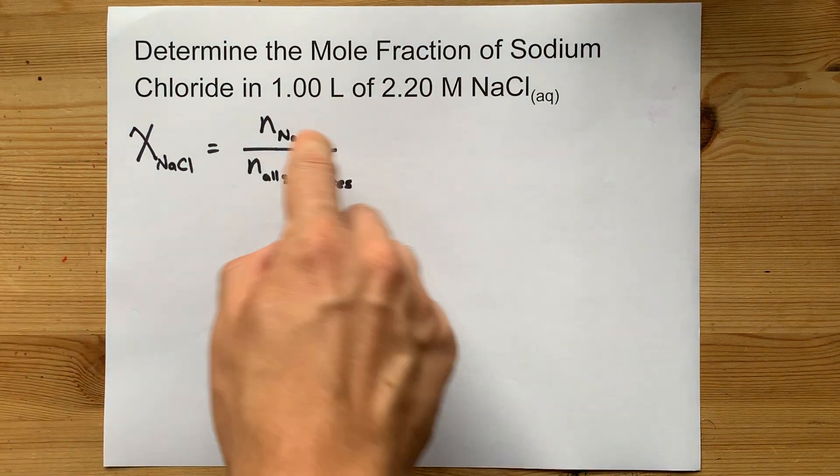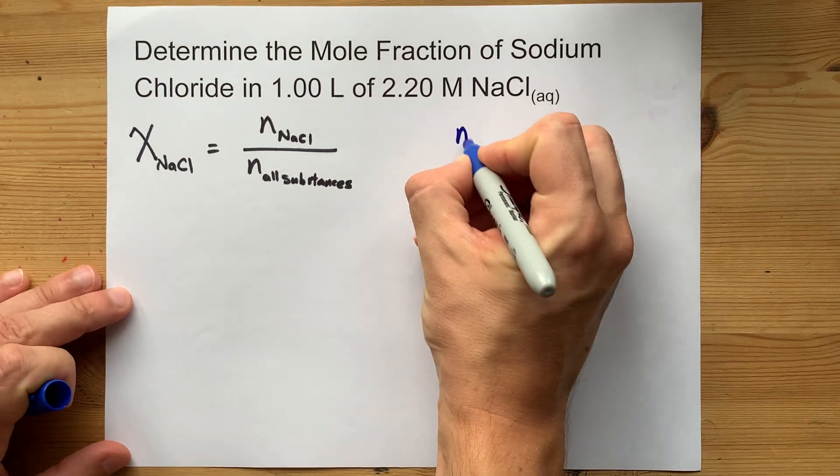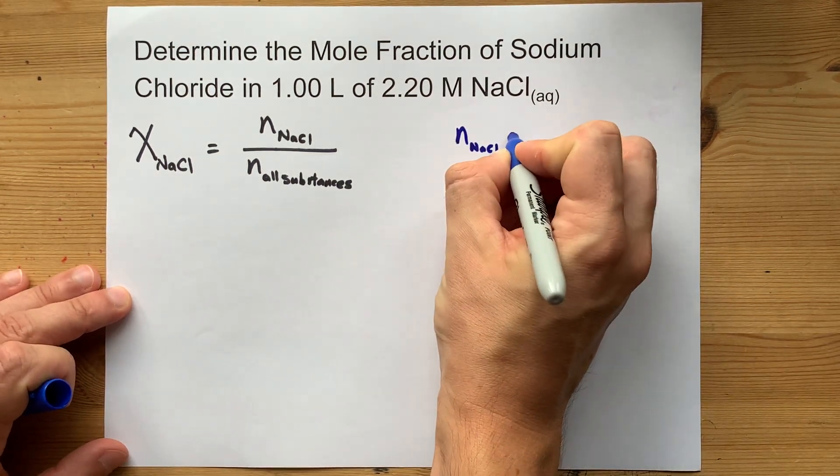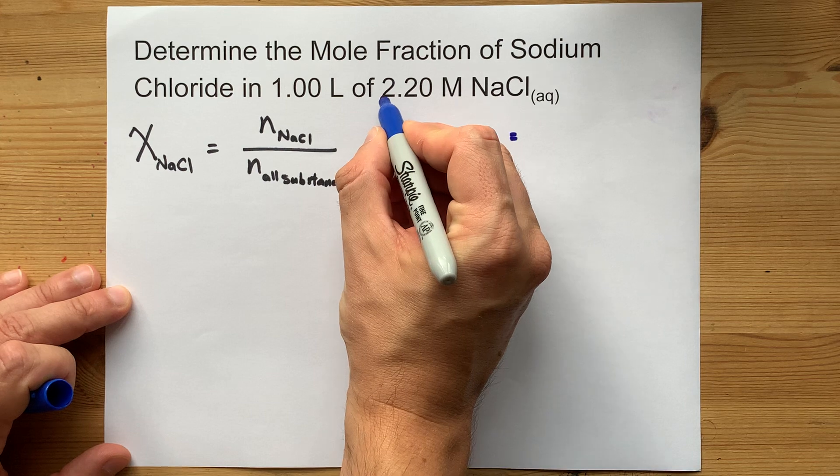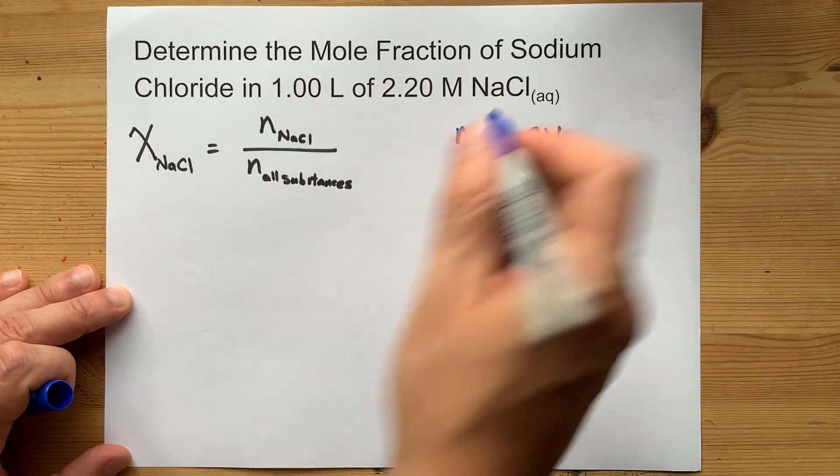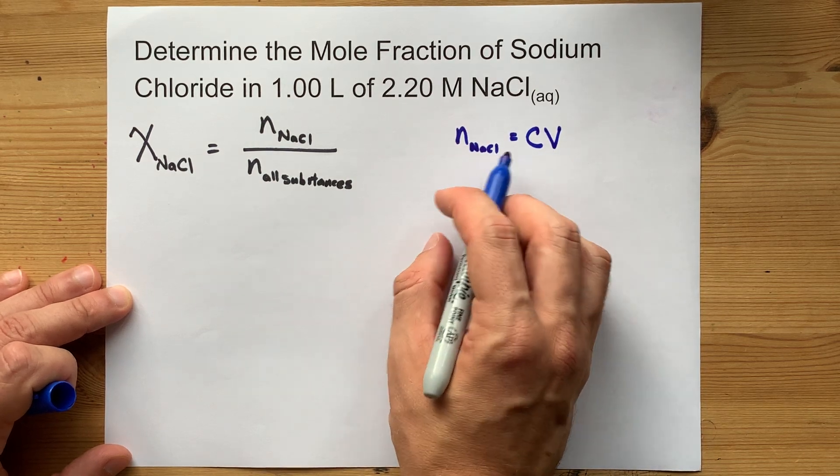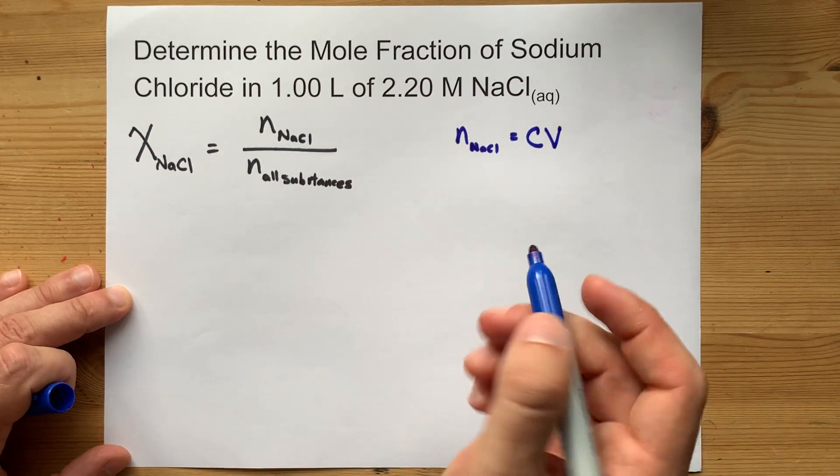But what matters is how do you figure out the number of moles of each of those things? Well, the number of moles of NaCl is going to be easy because we were given the concentration of the solution and the volume of the solution. Moles equals concentration times volume. It's a formula that you probably should know by now.